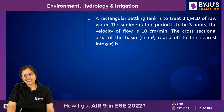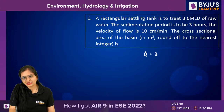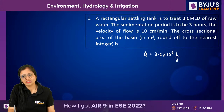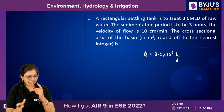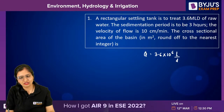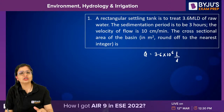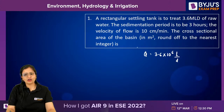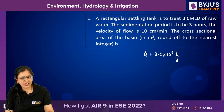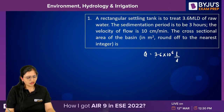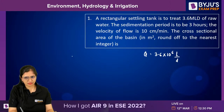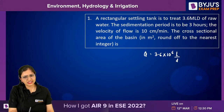A rectangular settling tank is used to treat 3.6 MLD (3.6 × 10⁶ liters per day) of raw water. The sedimentation period — or detention period — is 3 hours. Velocity of flow is given. It is asking you the cross-sectional area of the basin. How will you calculate that? There are two things: plan area which is L × B, and cross-sectional area which is B × H.